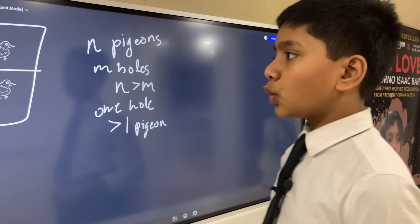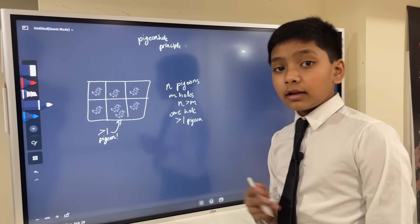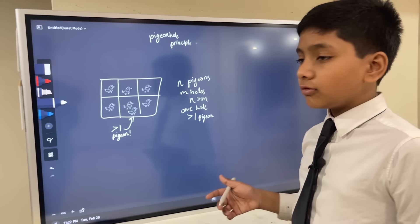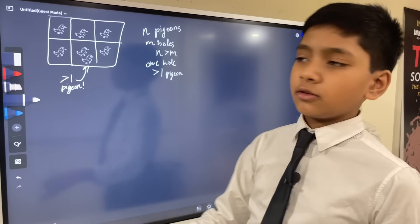So, the statement, the general statement of the pigeonhole principle, is that if you have n pigeons and m holes, such that n is greater than m, then one hole must contain more than one pigeon. And so, how can we prove that? Well, we can use the contrapositive. What is the contrapositive? Well, it's basically like the opposite of a statement, but it's still true.